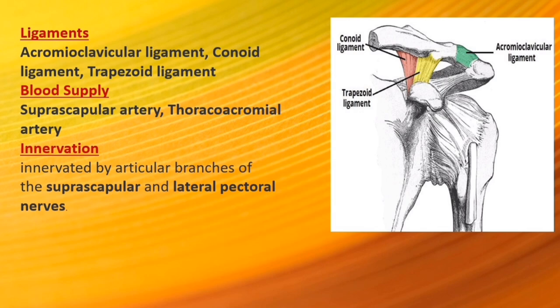The acromioclavicular joint allows a gliding movement in the superior, inferior and anteroposterior planes, along with a small amount of axial rotation. As no muscle acts directly on the joint, all movements are passive and are initiated by movement at other joints.